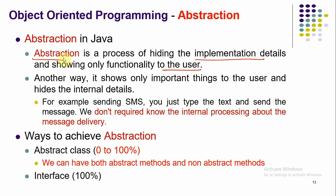Another advantage of abstraction is security — by using abstraction we can implement security in Java applications. For example, when you send an SMS or WhatsApp message, you open the application, type the message, and click send. You then get acknowledgement that the message is dispatched or delivered. We don't need to know the internal processing — how it connects to the server or how the message is deposited. Those internal logic details are not required from the customer's point of view.